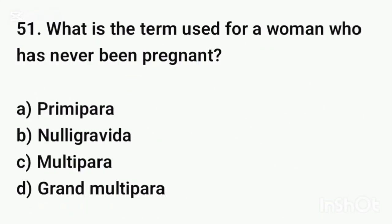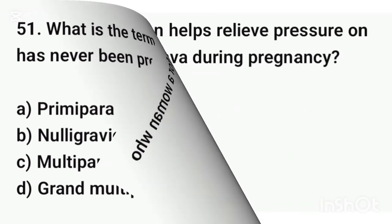Question number fifty-one. What is the term used for a woman who has never been pregnant? The correct answer is option A: Primephora (Nullipara).